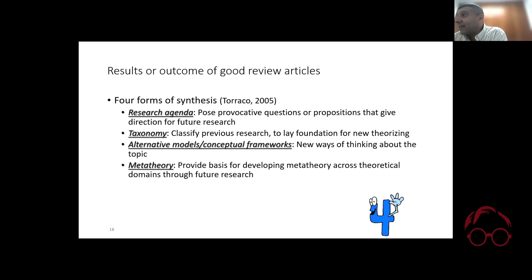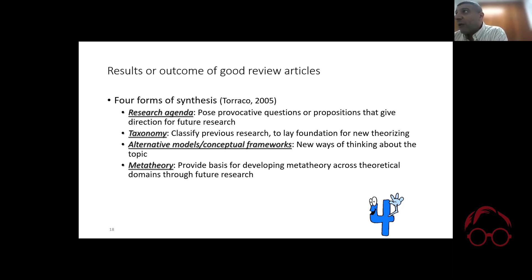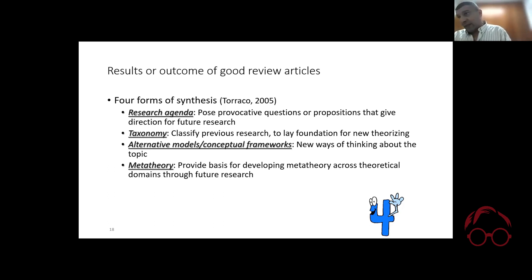An alternative outcome is a conceptual framework. At the end, I want your paper to have boxes with constructs connected by arrows — a cause-and-effect type framework, a figure, or a model. I want to see how the different components of the research fit together. That's not something bibliometrics by itself generates; it requires your understanding of the content.